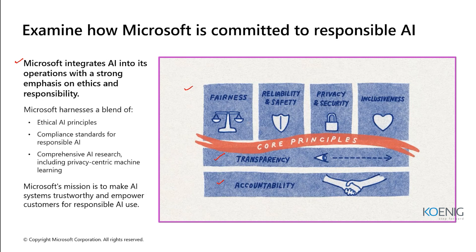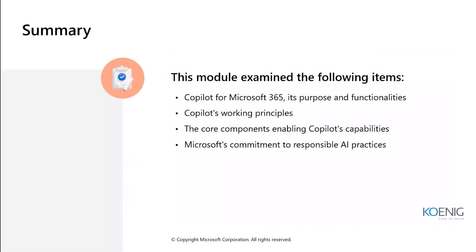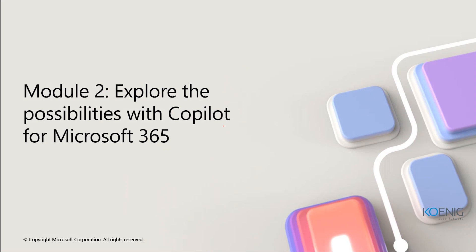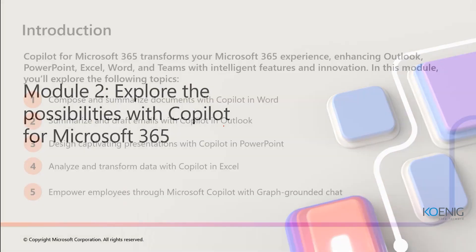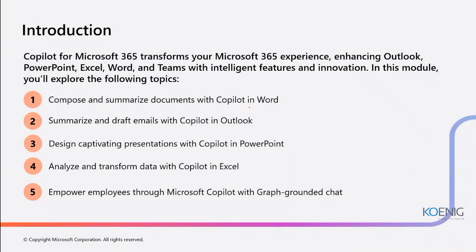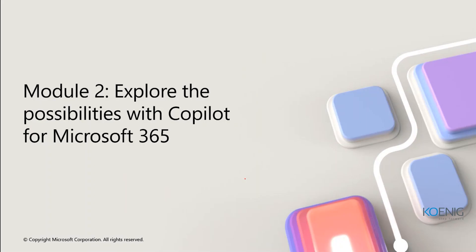Now we understand the basic parts: how Co-Pilot works, its logical architecture, and responsible AI. This ends module number one. Now let's start with module number two — exploring the possibilities with Co-Pilot for Microsoft 365. In this section we'll cover composing and summarizing documents with Co-Pilot in Word, summarizing and drafting emails in Outlook, designing presentations in PowerPoint, analyzing data in Excel, and Microsoft Co-Pilot with graph-grounded data — applications you likely use on a day-to-day basis.